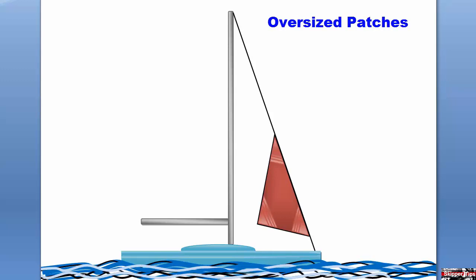Your storm jib will be built with oversized patches at the head, tack, and clew to distribute the heavy loads that are imposed upon the sail in high winds. Rings are installed into the corners of the patches and snap-on hanks along the luff of the sail from the head to the tack.